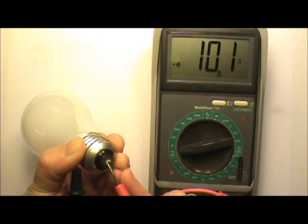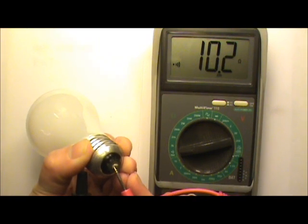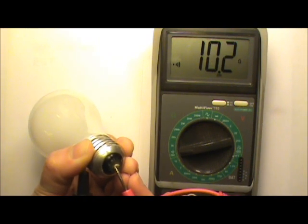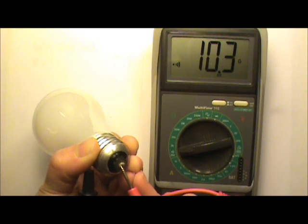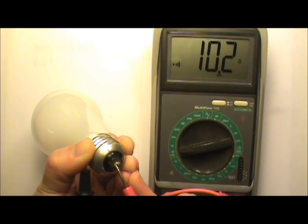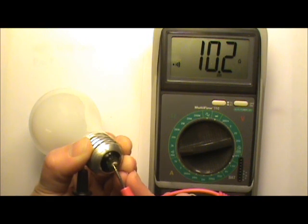Our calculation earlier said 144 ohms, but we are only getting about 10 ohms here. We did not make a mistake in our calculations, and the meter's reading is not wrong either. So why the discrepancy?